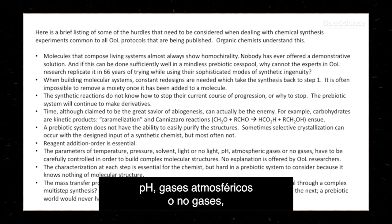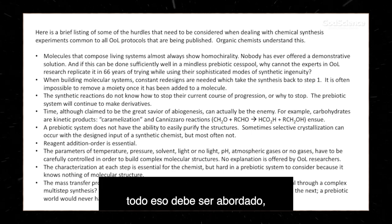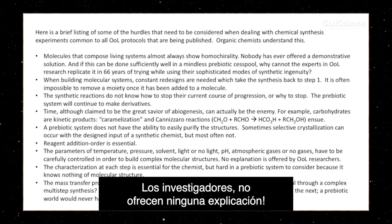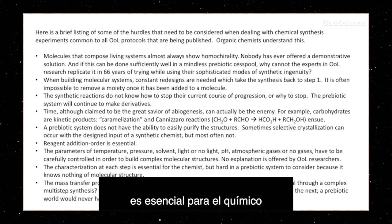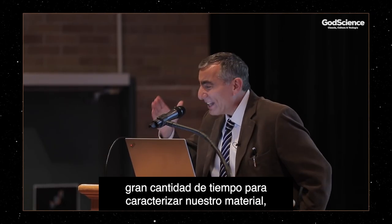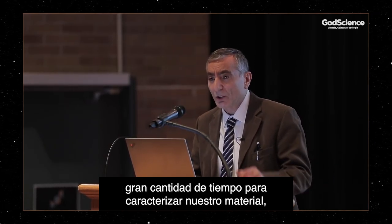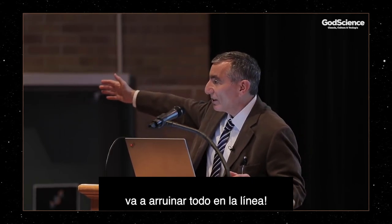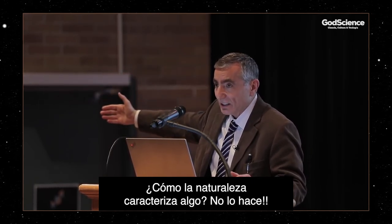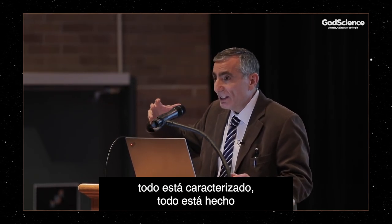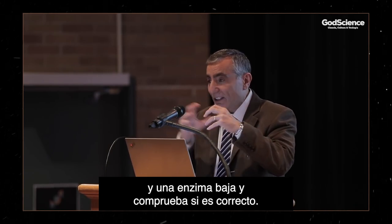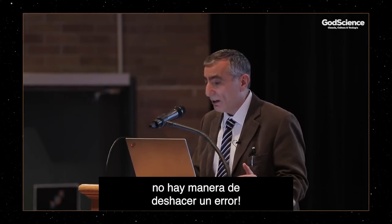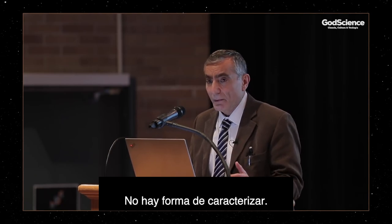There has to be careful structure to all of this synthetic chemistry — no explanation is offered in origin of life research. Characterization at each step is essential for the chemist. If you have the wrong structure as an intermediate, you're carrying forward a wrong structure that will mess up everything down the line. How does nature characterize anything? It doesn't. In natural biological systems, everything is characterized — an enzyme comes down and checks if it's the right thing, and if not, has ways to degrade it. But in a prebiotic system before there's an enzymatic world, there's no way to get rid of these things or to characterize what materials are.